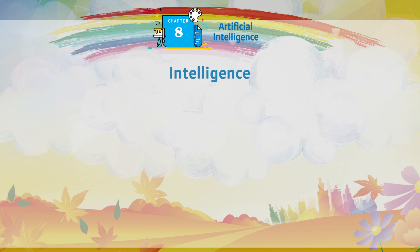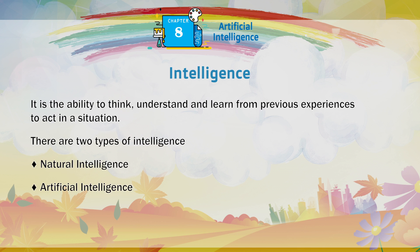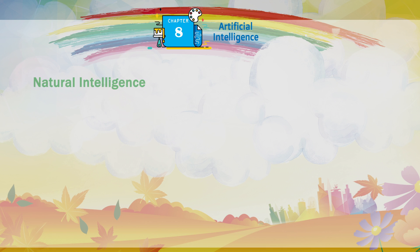Intelligence is the ability to think, understand, and learn from previous experiences, to act in a situation. There are two types of intelligence: natural intelligence and artificial intelligence.